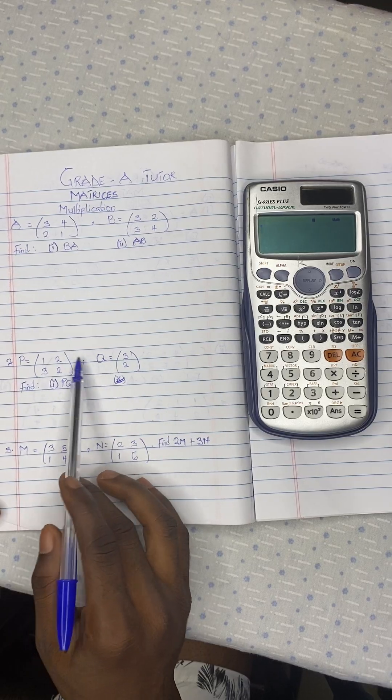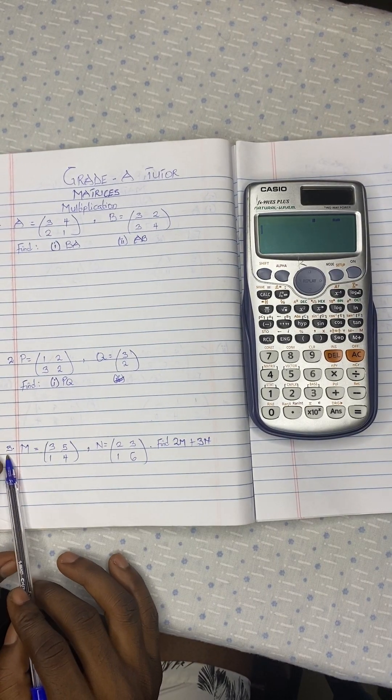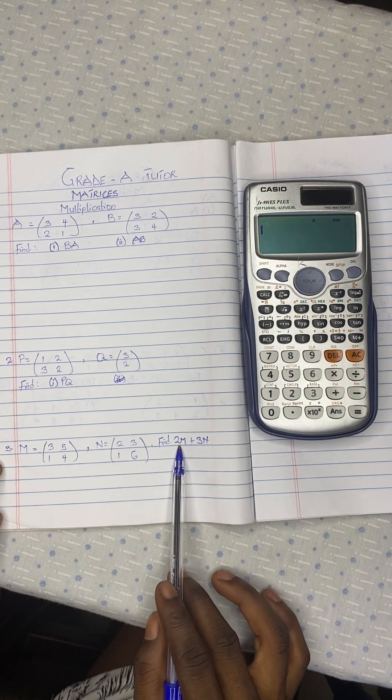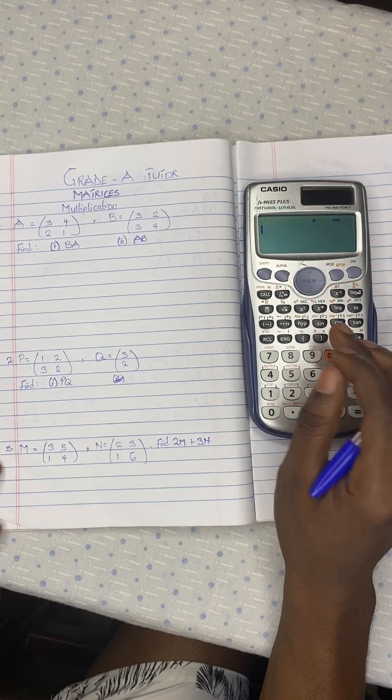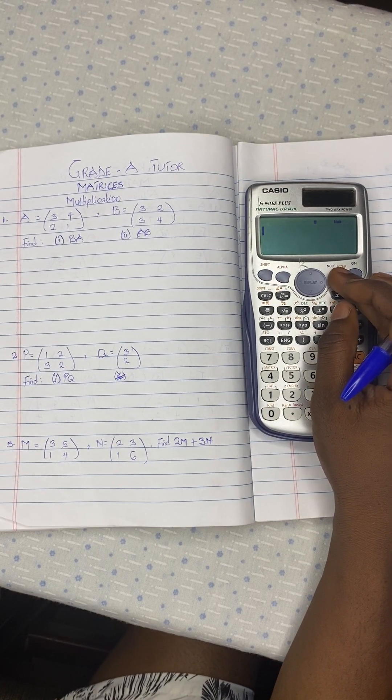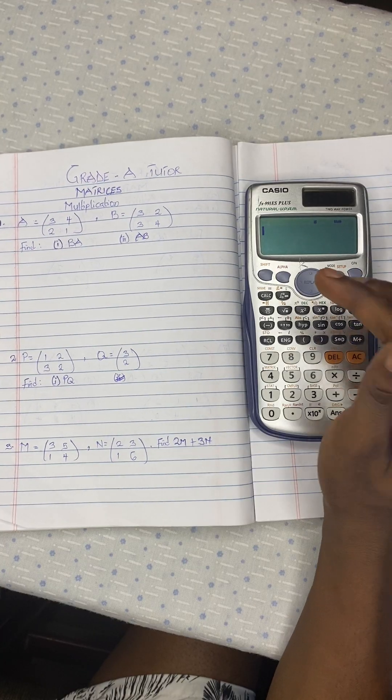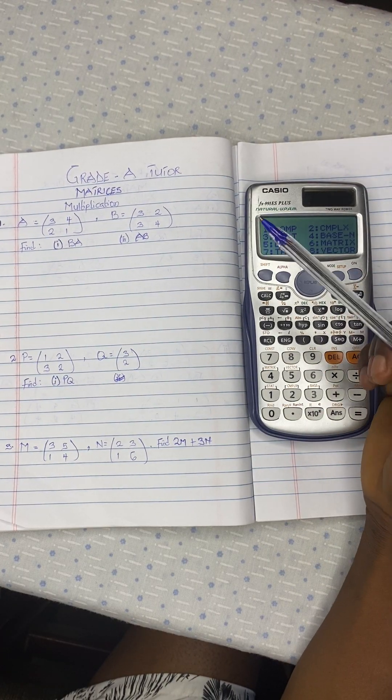Then for the second question, we have to calculate P multiplying Q. Then for the third one, that is multiplication by a scalar. So let's quickly run through them. So because we are done with addition and subtraction, you are familiar with the procedures. So let's quickly run through the questions.